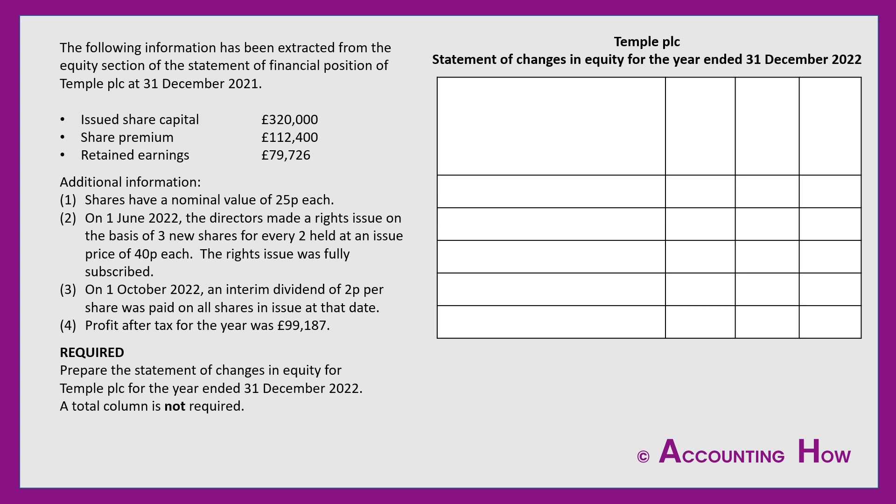We're being told that the following information has been extracted from the equity section of the statement of financial position of Temple PLC at 31st December 2021: issued share capital, share premium, and retained earnings, plus some additional information. The shares have a nominal value of 25 pence each. On 1st June 2022, the directors made a rights issue of shares. On 1st October 2022, an interim dividend was paid. The profit after tax for the year was £99,187. We are required to prepare the statement of changes in equity for Temple PLC for the year ended 31st December 2022.